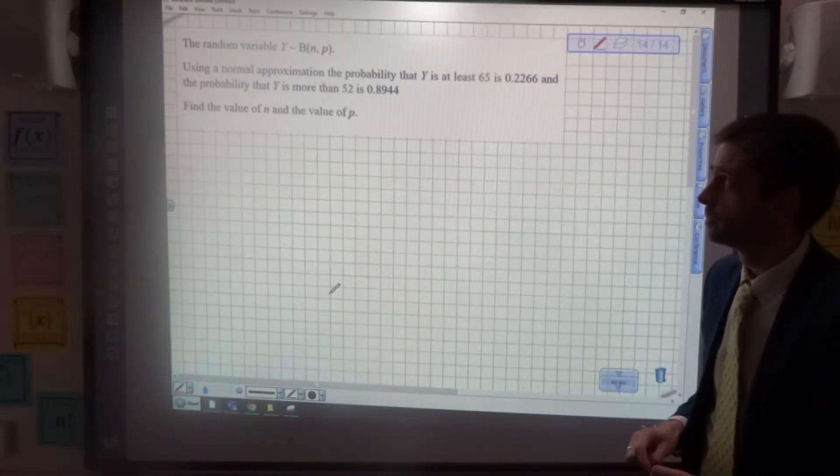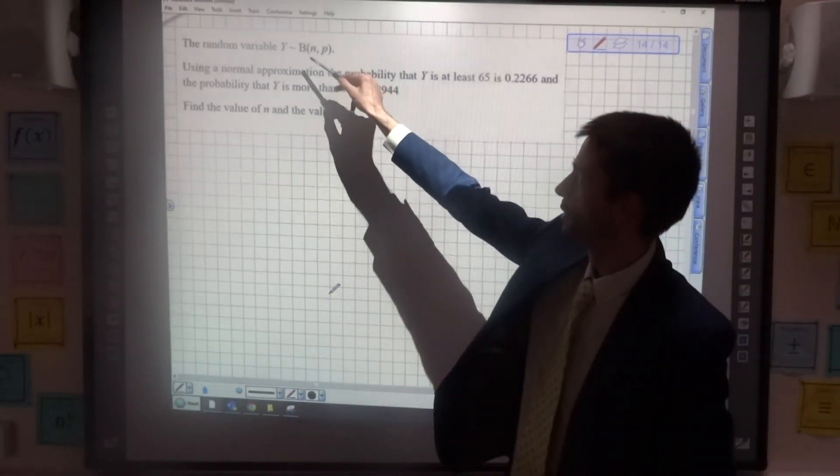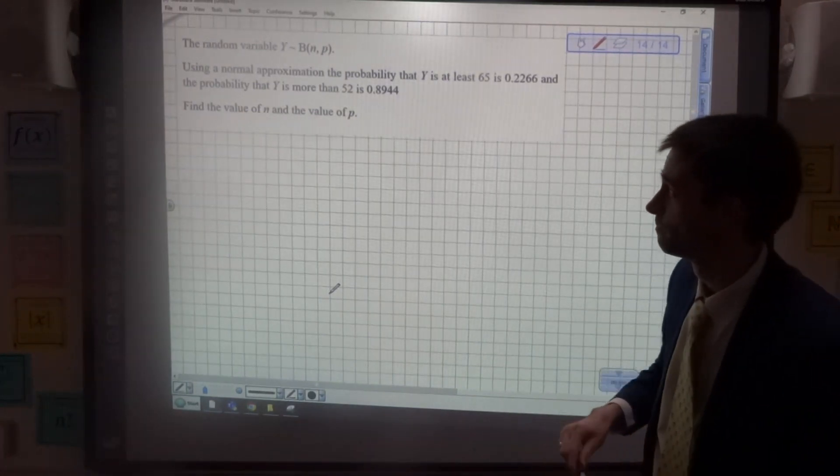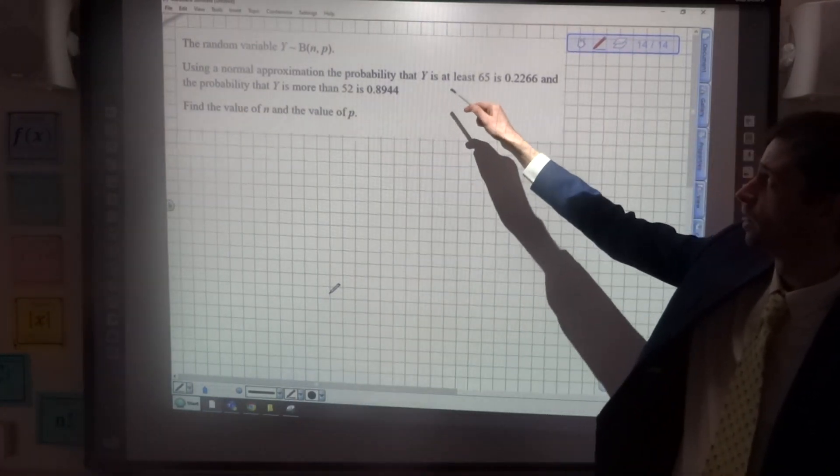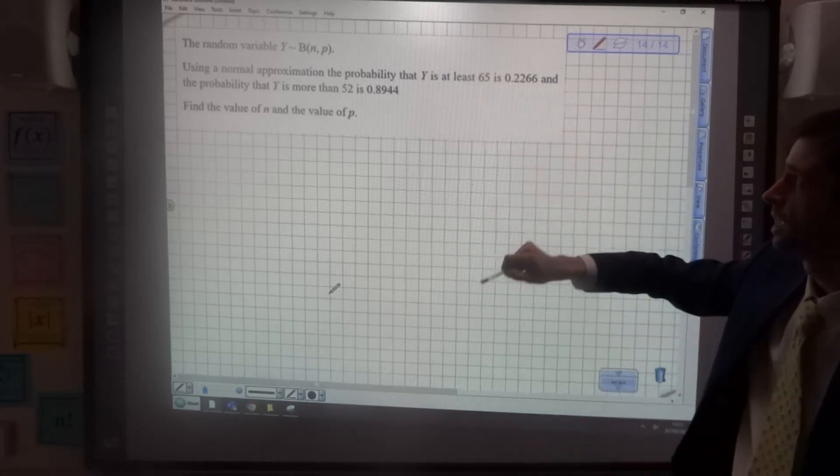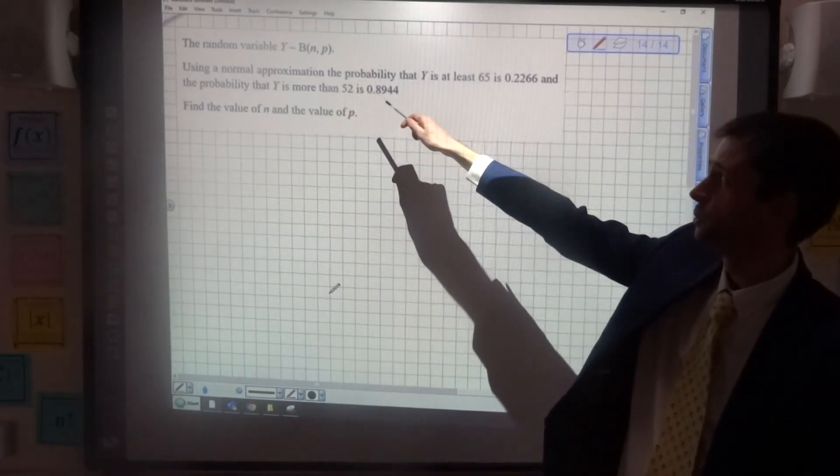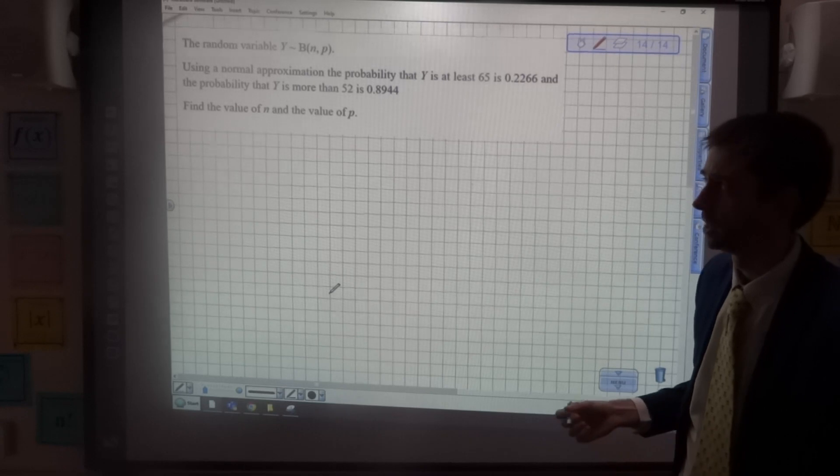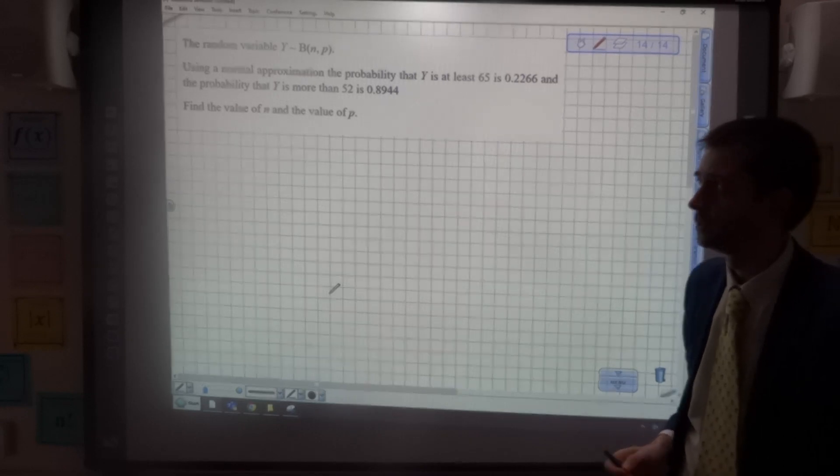Right, we have the random variable Y following a binomial np. We're being asked to use a normal approximation, and we're told the probability that Y is at least 65 is 0.2266, and the probability that Y is more than 52 is 0.8944. We're being asked to find the value of n and the value of p.